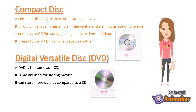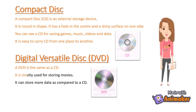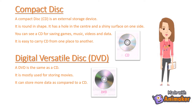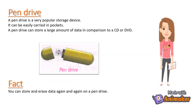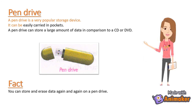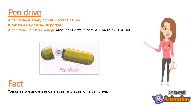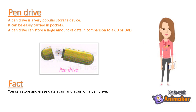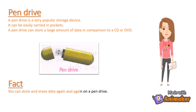Digital Versatile Disk (DVD): A DVD is the same as a CD. It is mostly used for storing movies. It can store more data as compared to a CD. Pen drive: A pen drive is a very popular storage device. It can be easily carried in pockets. A pen drive can store a large amount of data in comparison to a CD or DVD. You can store and erase data again and again on a pen drive.